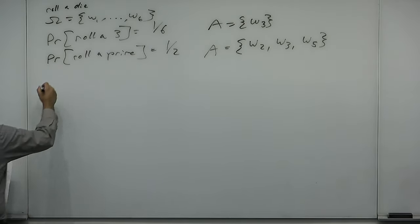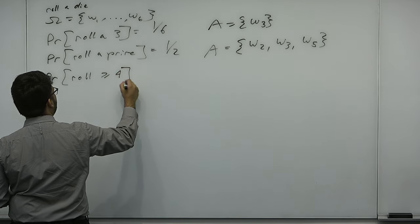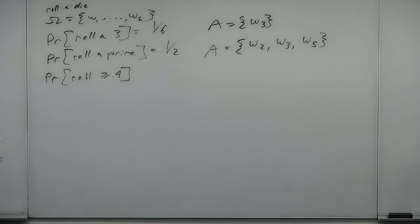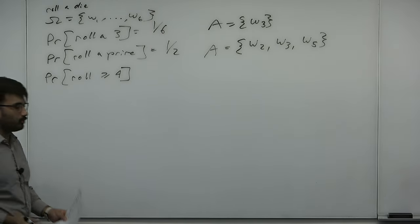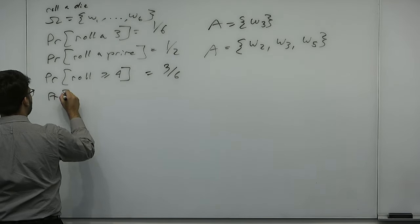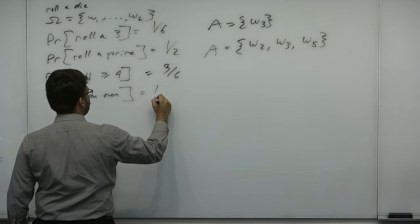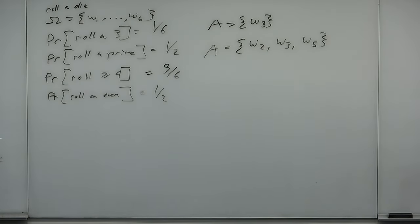What is the probability you roll a number greater than or equal to 4? One half. Why? Because you can roll 4, 5, or 6 — that's 3 outcomes out of 6. What is the probability you roll an even? One half — half the numbers between 1 and 6 are even: 2, 4, 6. One thing we notice immediately is that different events can have the same probability. The chance that you roll a prime number is equal to the chance that you roll an even number.